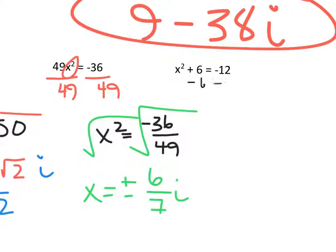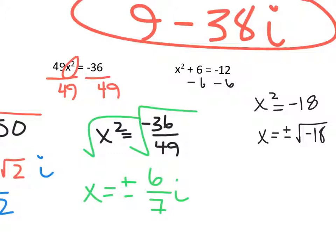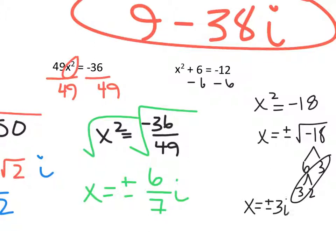For the last one, subtract 6 to get x squared equals negative 18. So x equals plus or minus the square root of negative 18. The square root of negative 18 breaks down — there's a group of 3 — so it's x equals plus or minus 3i root 2, because the 2 is left on the inside since it doesn't have a partner.